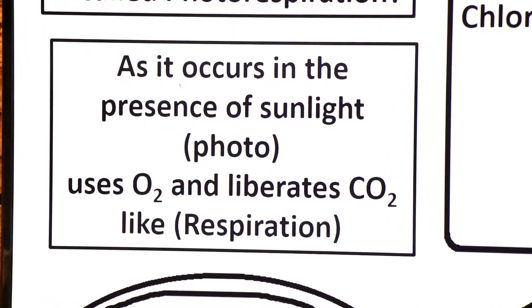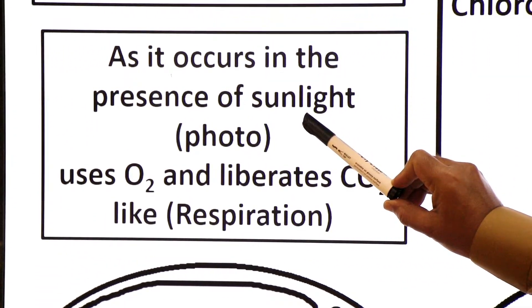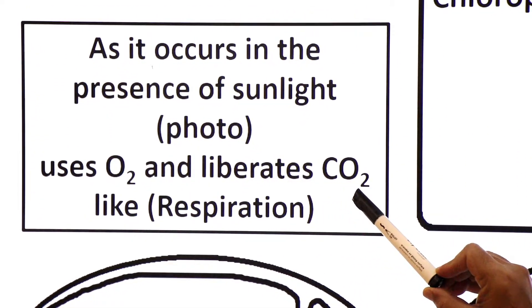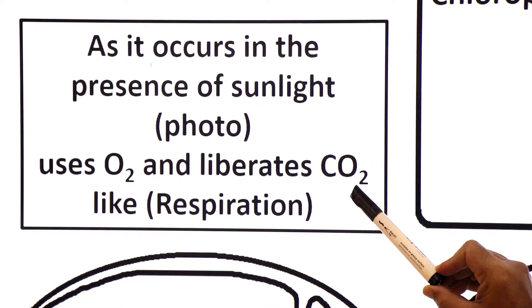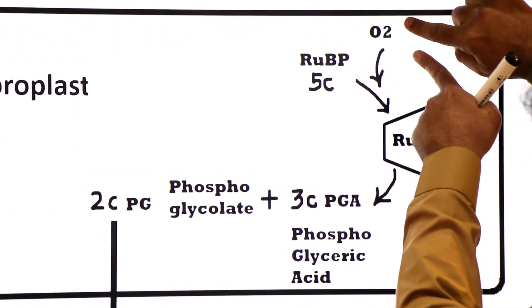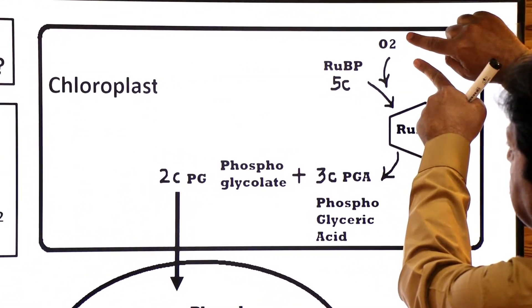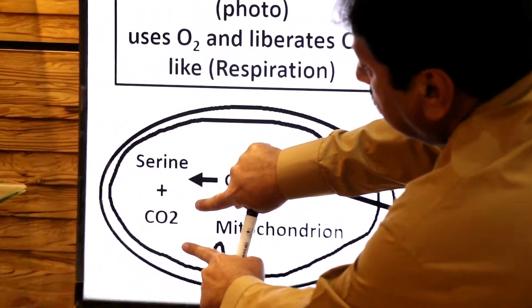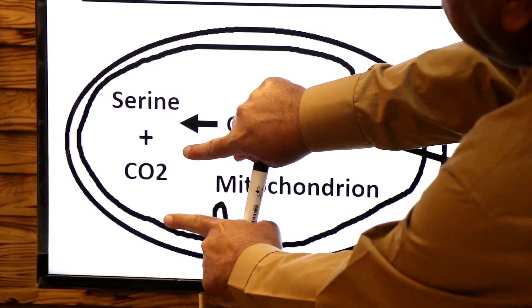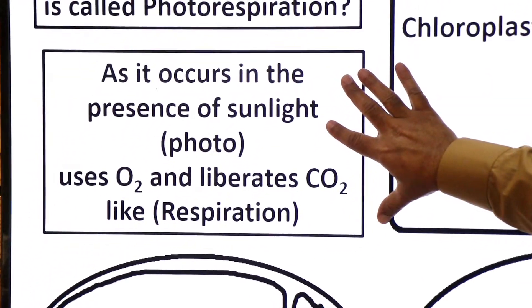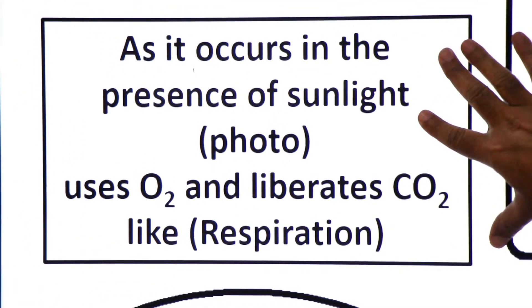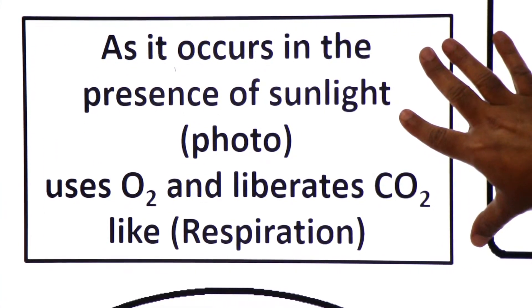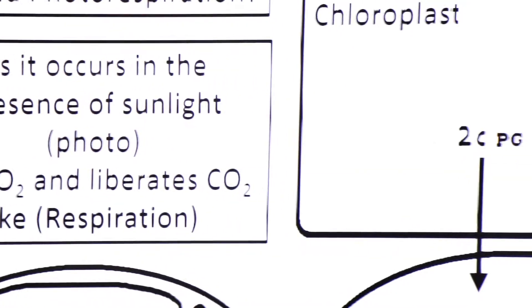Why is this process called photorespiration? It occurs in the presence of sunlight during the daytime — 'photo' — and it uses oxygen and liberates carbon dioxide just like respiration. It consumes oxygen and releases carbon dioxide, which is why it is called photorespiration.